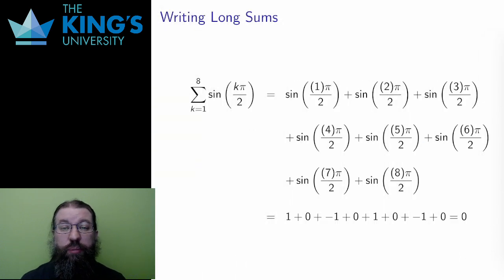Let me do a couple more examples to make the notation clear. Here is a sum with index k and bounds 1 to 8. So k will start at 1 and increase by 1 until it stops at 8. The term is sine of k pi over 2. So for every index k, I replace k in the term with its value, and I get some value of the sine function. I've written all these down here.